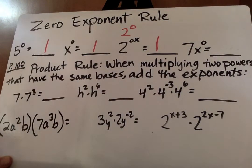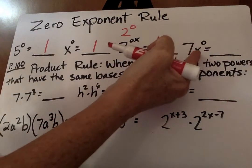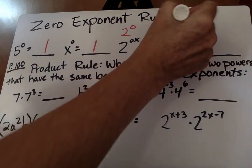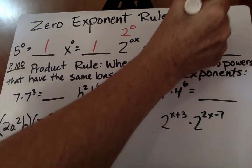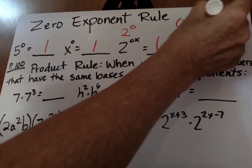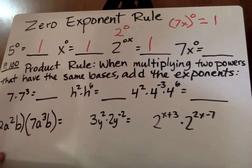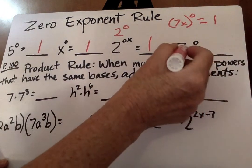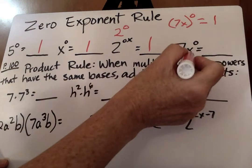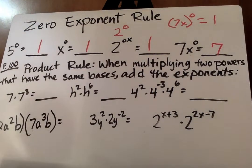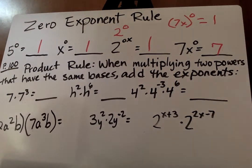What about this one? So, this zero power only acts on the x. It does not act on the 7. If it was in parentheses like this, 7x to the zero power, then yes, I would put 1. But in this case, it's not. So we say x to the zero power is 1, and we go 1 times 7, your answer there will be 7. That one was a little bit of a trickster.